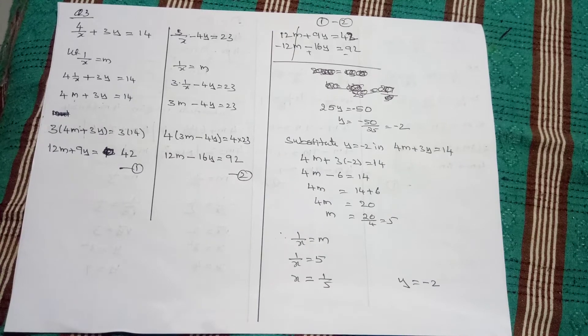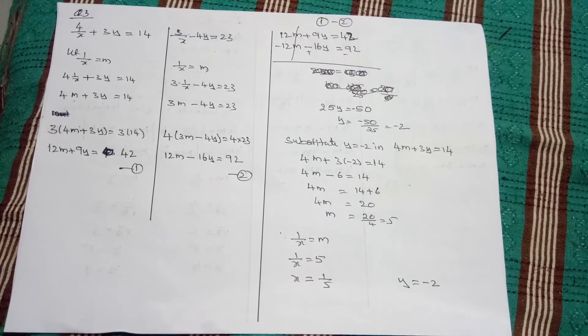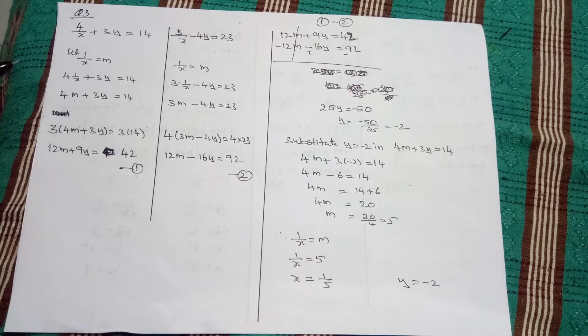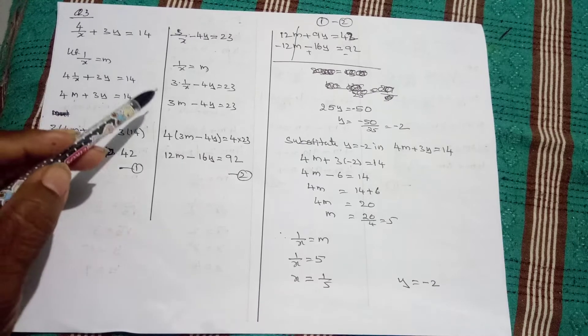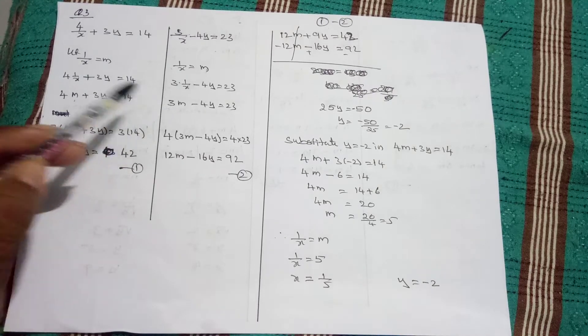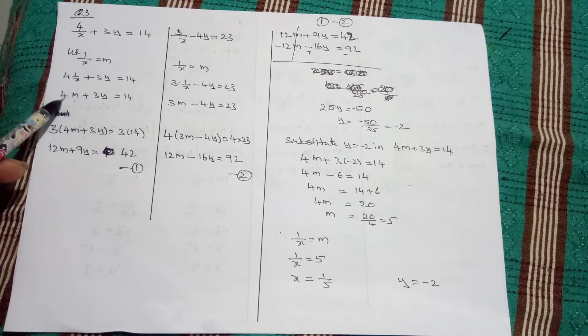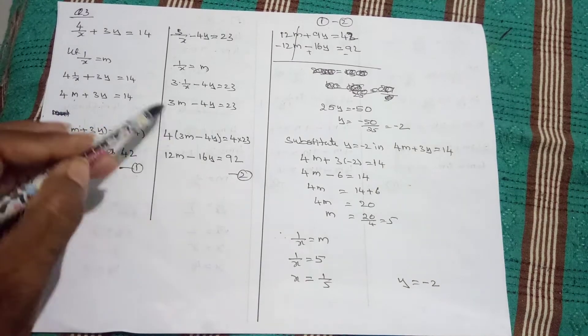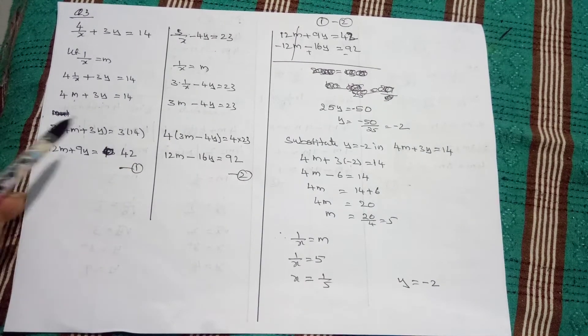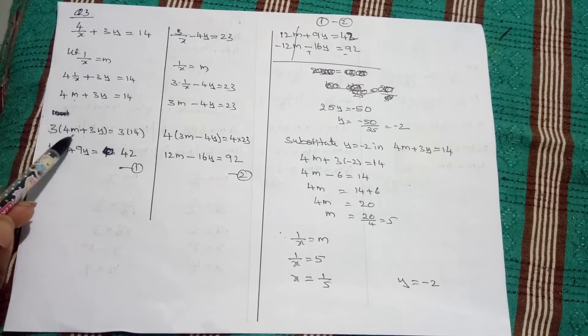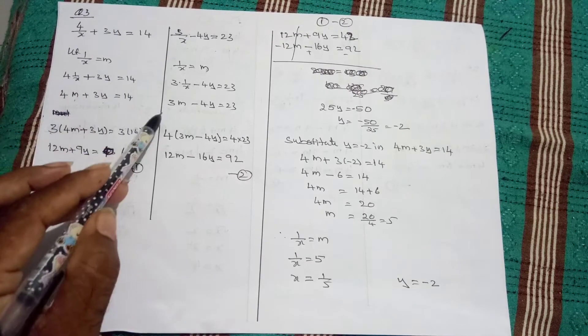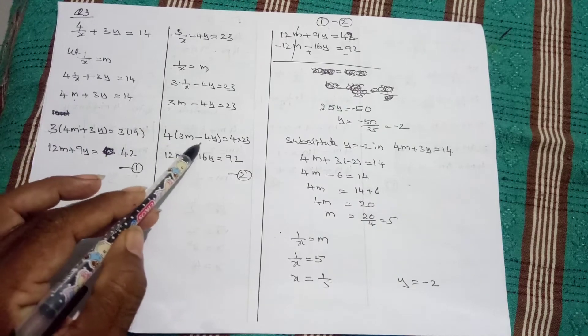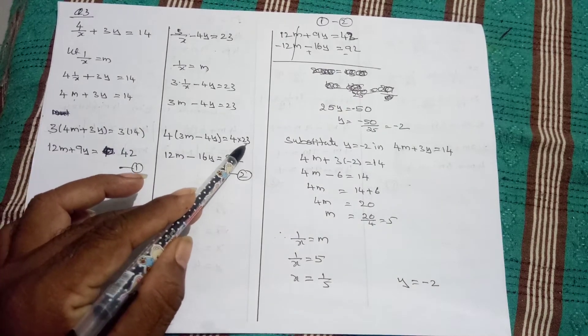Now, target any variable, m or y. I targeted m. Here 4 is there, here 3 is there. With 3, I want to multiply this equation. With 4, I want to multiply this equation. So, 3 times 4m plus 3y equals 3 times 14, and 4 times 3m minus 4y equals 4 times 23.